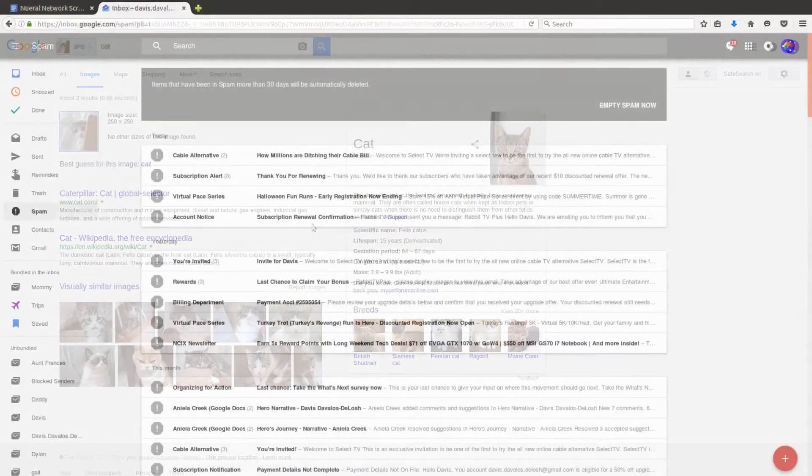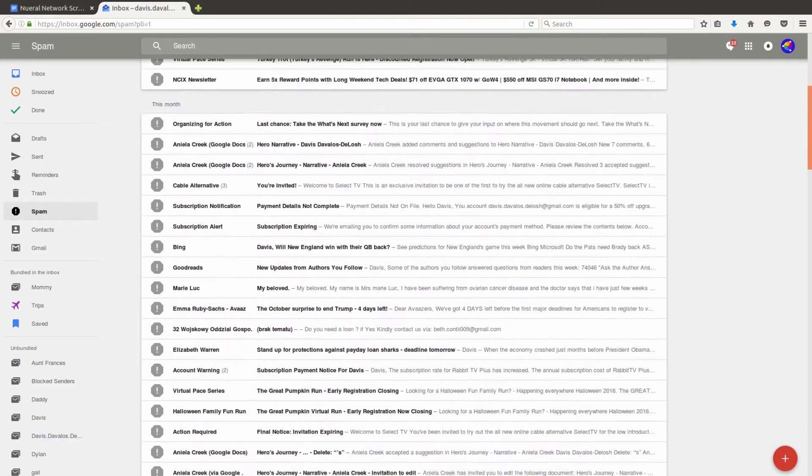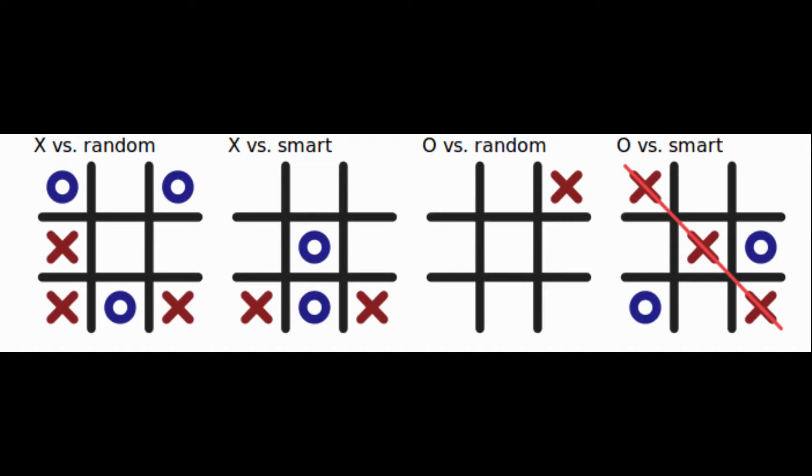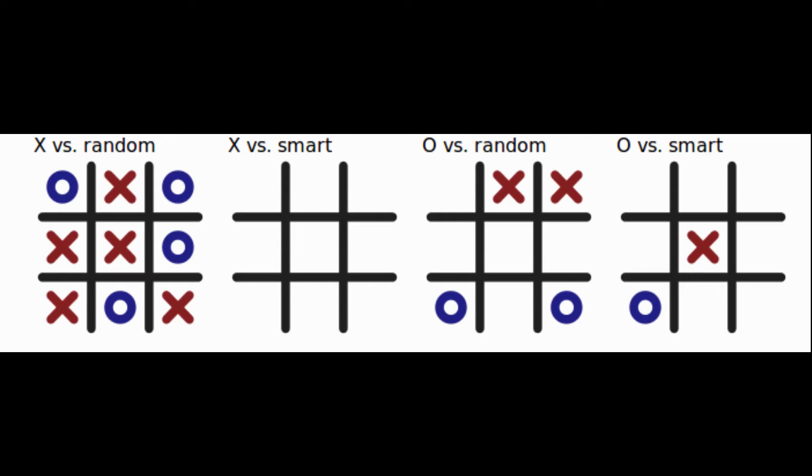Neural networks are also what blocks spam from getting to your inbox, can play your favorite game marvelously, and have been used to diagnose breast cancer faster and more accurately than any other technology out there.